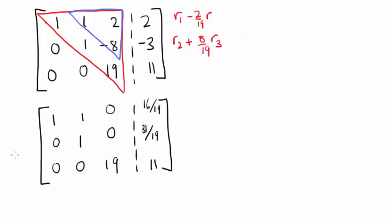At this point, we've finished using the third row. And so it's convenient to divide this row by 19. So that we can read off the solution for z.